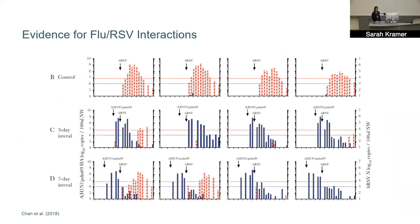Some past evidence suggests a negative interaction between these two viruses. A figure from an experimental study in ferrets shows RSV shedding in red and influenza in blue. When ferrets were infected with influenza three or seven days before RSV exposure, it was very difficult or impossible to infect them with RSV, and the peak timing of shedding was delayed. This effect went away by day 11. The same was not observed when ferrets were infected with RSV first, suggesting an asymmetric interaction where flu affects RSV but not necessarily the reverse.